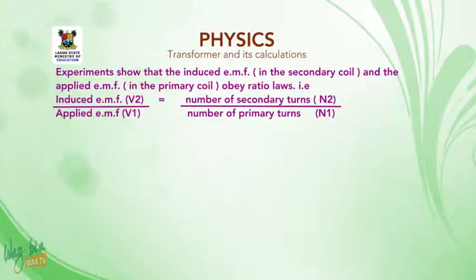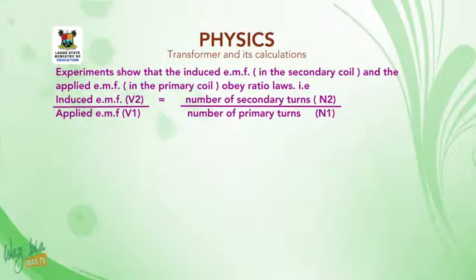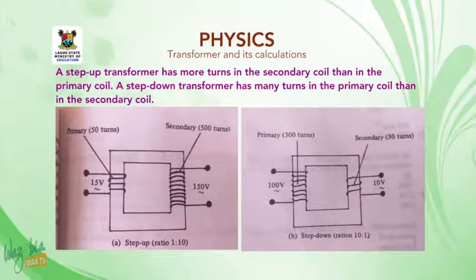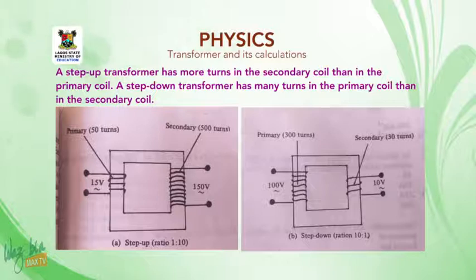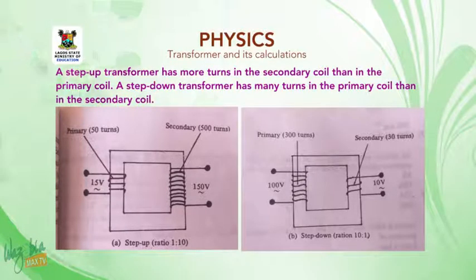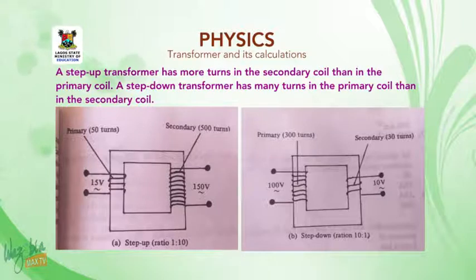That is, induced EMF V2 over applied EMF V1 is equal to number of secondary turns N2 over number of primary turns N1. A step-up transformer has more turns in the secondary coil than in the primary coil. A step-down transformer has more turns in the primary coil than in the secondary coil. In the first diagram we have a step-up transformer — the number of turns in the primary is lower than in the secondary. In the second diagram, the step-down transformer, the number of turns in the primary is far greater than in the secondary.